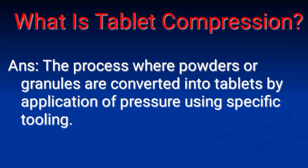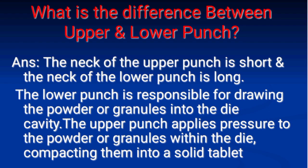Next: What is tablet compression? Answer: Tablet compression is the process where powders or granules are converted into tablets by application of pressure using specific tooling. Next: What is the difference between upper and lower punch? The neck of the upper punch is short and the neck of the lower punch is long. The lower punch is responsible for drawing the powder or granules into the die cavity. The upper punch applies pressure to the powder or granules within the die, compacting them into a solid tablet.